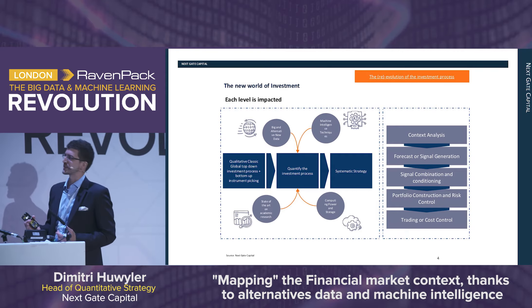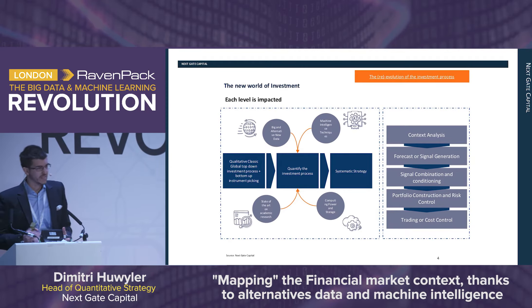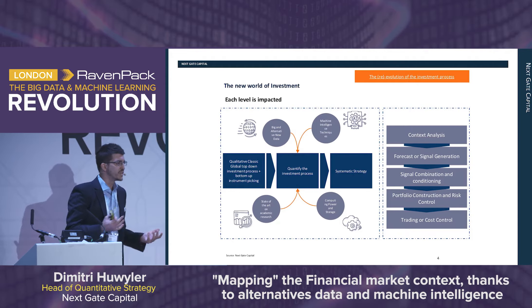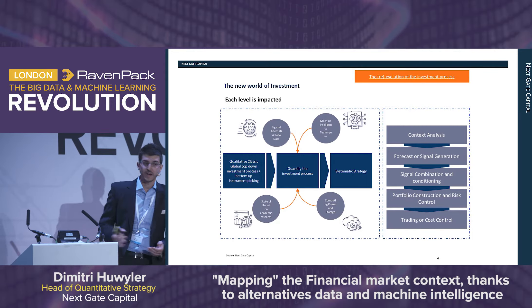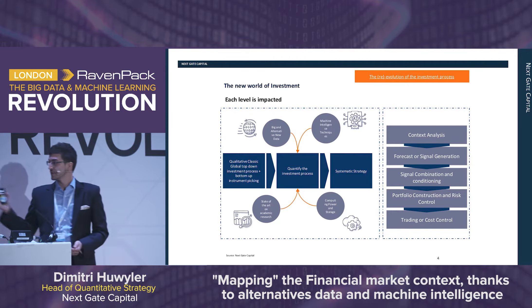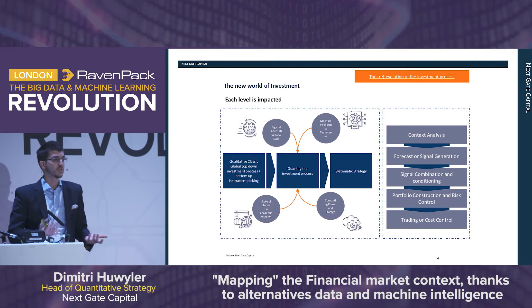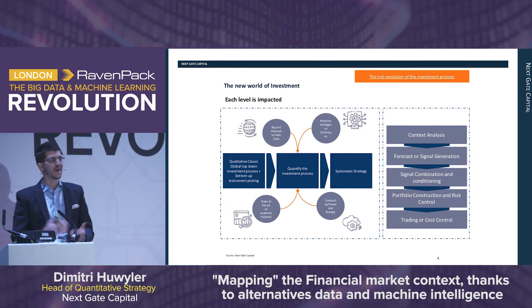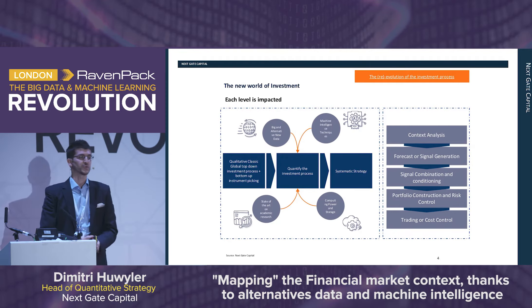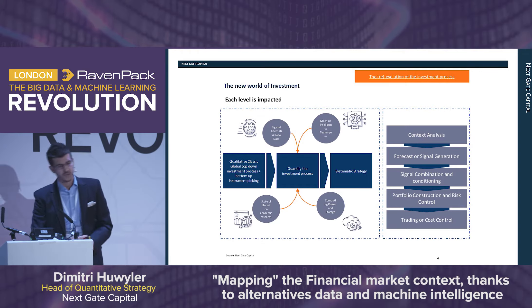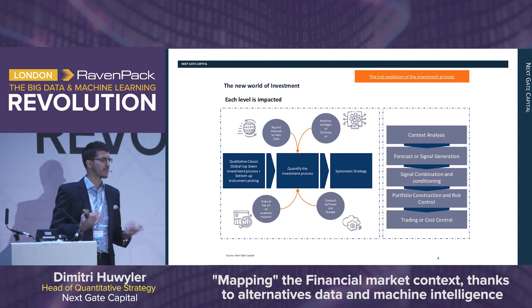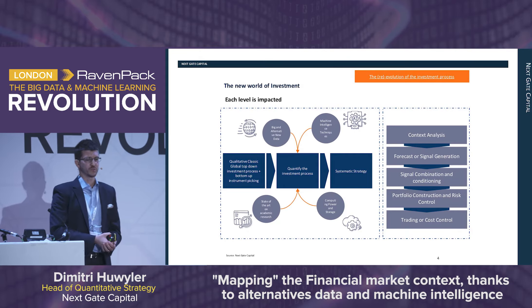The first step is context analysis — basically understanding which environment we are in. The second is forecast or signal generation: we need to capture signals for our strategies. Third, we have signal combination and conditioning — what do you do when you have multiple signals and how do you combine them? Then comes portfolio construction and risk adjustment: how do you optimize your portfolio with risk budgeting? And finally, of course, trade cost control and optimization. We see opportunities in all of those steps, thanks to the new dimensionality from alternative data and the tools we now have to process them.